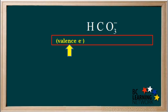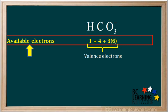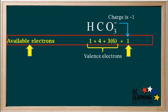The first thing we need to do is find the total number of valence electrons in this ion. A hydrogen atom has one valence electron, a carbon atom has four, and three oxygen atoms contribute three times six, or eighteen valence electrons. Since the ion has a net charge of negative one, we add one electron to the valence electrons. So the total number of electrons available is 1 plus 4 plus 18 plus 1, which equals 24.